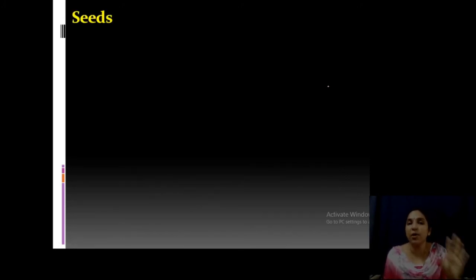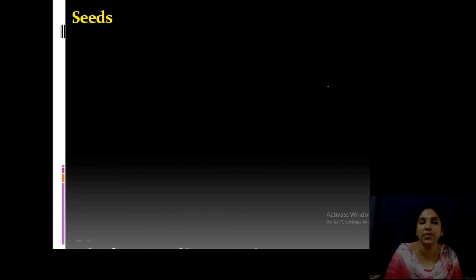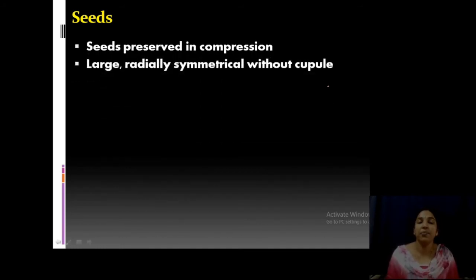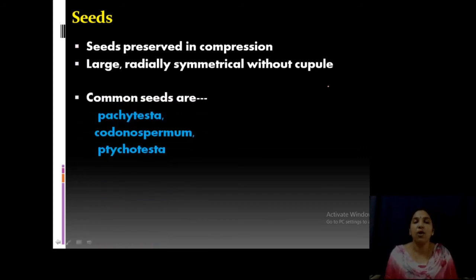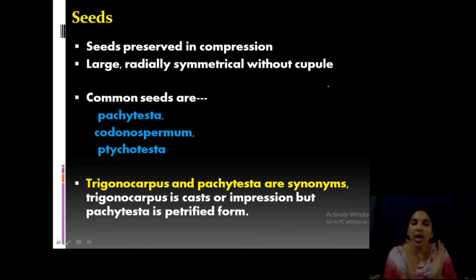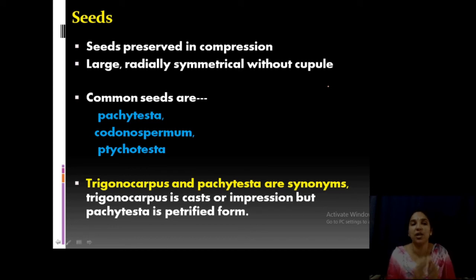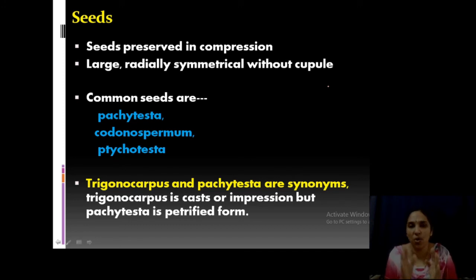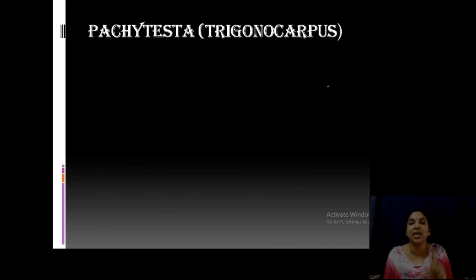Now moving on to the seed — Pachytesta or Trigonocarpus. They are preserved as compressions associated with leaves. Common seeds are Pachytesta, Codonospermum, and Hexitesta, but you study only Pachytesta. Trigonocarpus and Pachytesta are synonyms — known by different names only. The distinction is that Trigonocarpus is a cast or impression form of fossilization, while Pachytesta is the petrified form. Brogniart first described the cast and impression and called them Trigonocarpus; later renamed Pachytesta oliviformis.